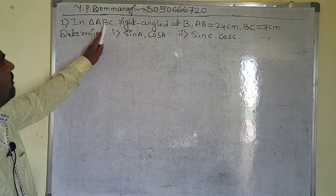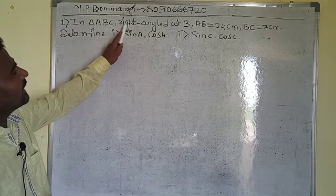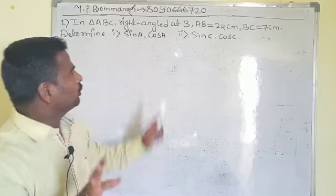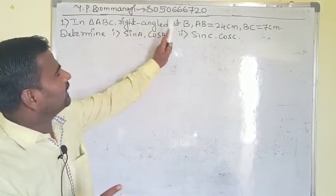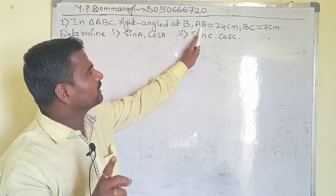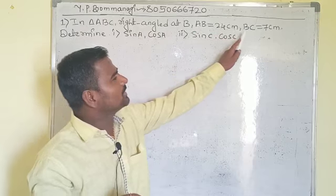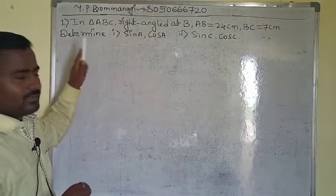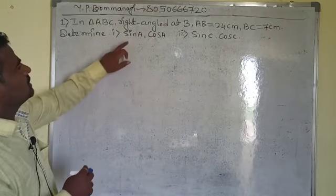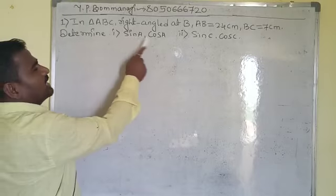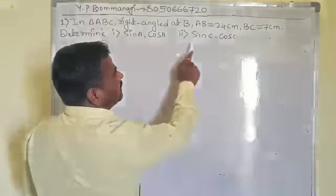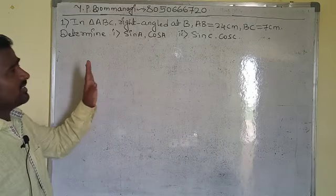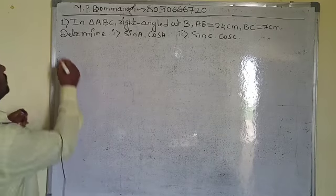In triangle ABC, right-angled at B, they have given: length AB is 24 centimeters and BC is 7 centimeters. They are asking us to determine sine A, cosine A, and then sine C, cosine C. This is the clear picture of what has been given.